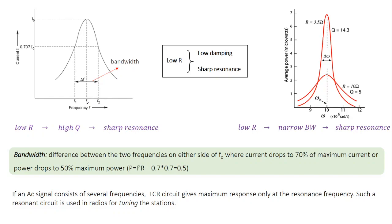That covers the analysis of AC flow through an LCR circuit and the characteristics of the resonance condition. In the next class, we will learn how to analyze the phase relation between voltage and current in an AC network using the J operator. Thank you.